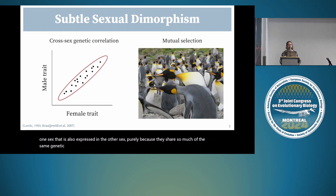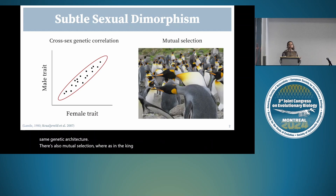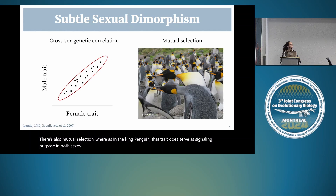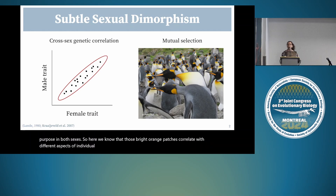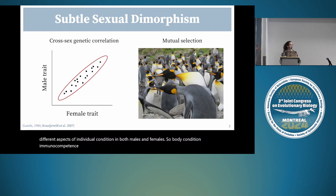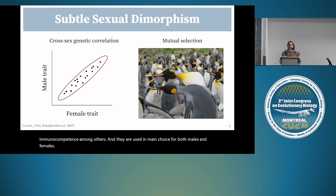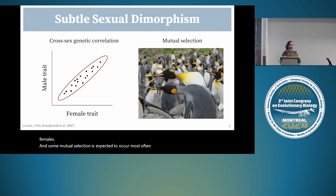It's fairly intuitive to assume that in some cases a signaling trait in one sex is also expressed in the other, purely because they share so much of the same genetic architecture. There's also mutual selection, where as in the king penguin, that trait serves a signaling purpose in both sexes. Those bright orange patches correlate with different aspects of individual condition—body condition, immunocompetence—and are used in mate choice for both males and females. Mutual selection is expected to occur most often in monogamous species with biparental care.